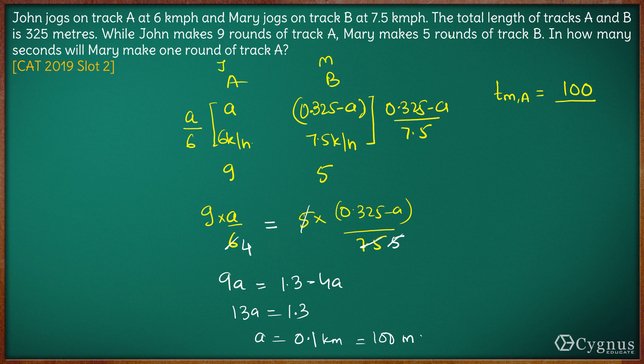Time taken by Mary to complete one round of track A would be 100 meters divided by Mary's speed. Mary's speed is 7.5 kilometers per hour. Let's convert this into meters per second by multiplying with 5 by 18. This becomes 100 into 18 divided by 7.5 into 5.